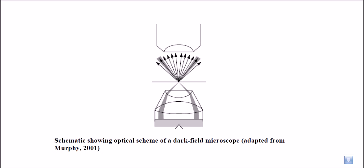Now, when you place a specimen on the slide, the peripheral beam passes through the specimen. According to the density of the specimen, light is diffracted in different ways. Some of those beams are diffracted inward and collected by the objective lens. The objective collects those diffracted beams, allowing us to observe the specimen as bright light against the dark background, while areas of the slide with no specimen remain dark.